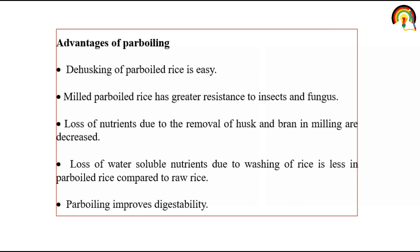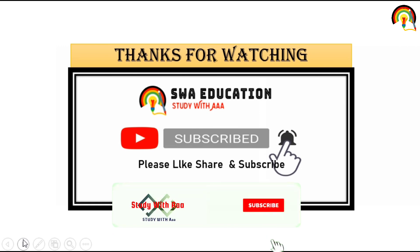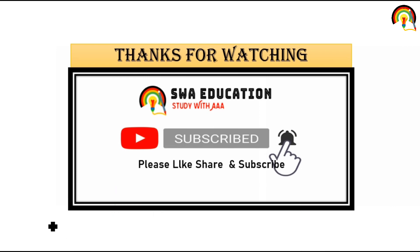So today we discussed what is food processing — primary, secondary and tertiary food processing. We also discussed cereal food processing, including primary and secondary processing, parboiling and milling. I hope this lecture is very clear to all of you. Thank you so much everyone. If you find this video beneficial please don't forget to like, share and subscribe this channel for more such videos. If you have any query regarding this lecture you can comment down below. Thank you so much.